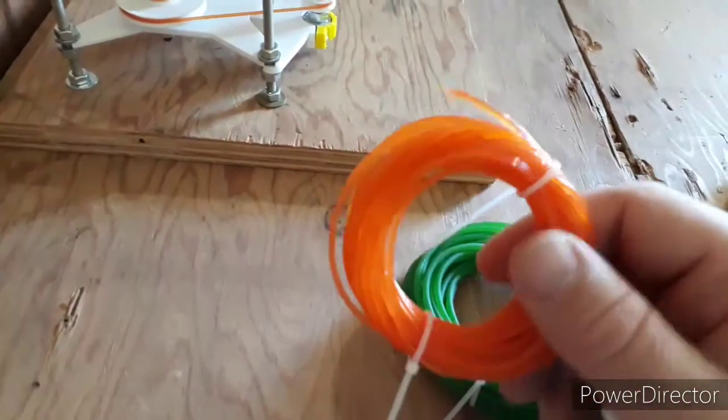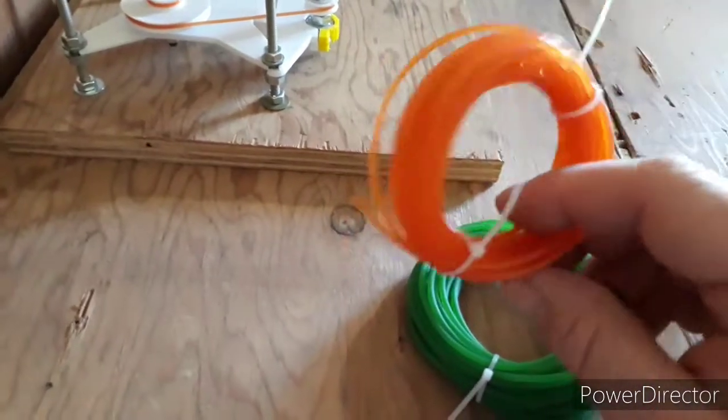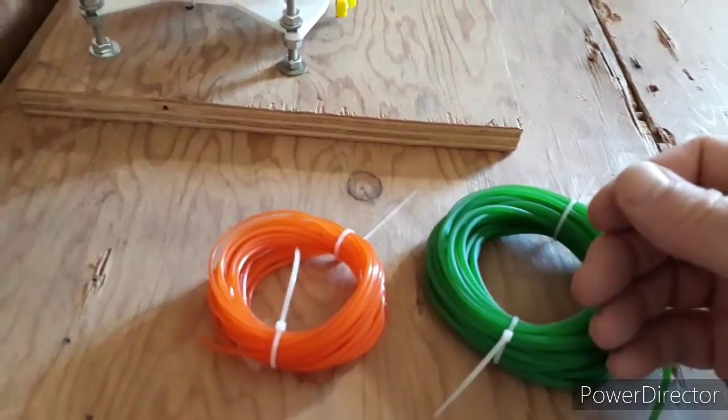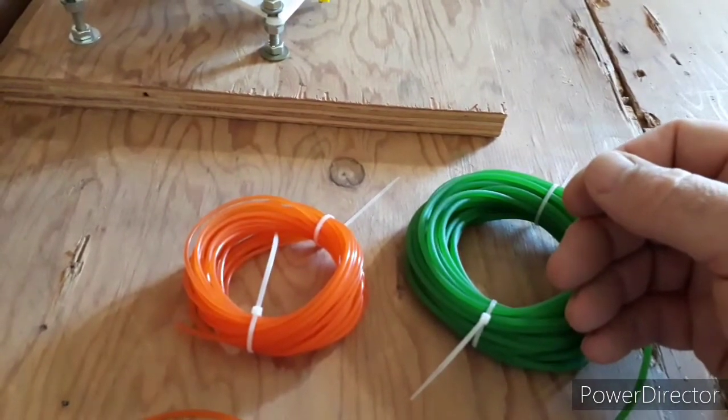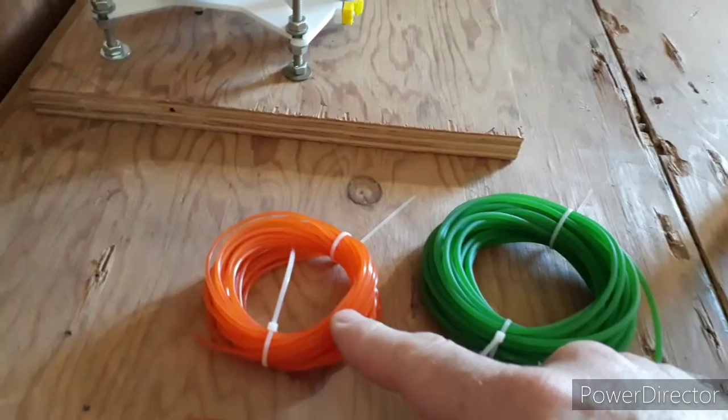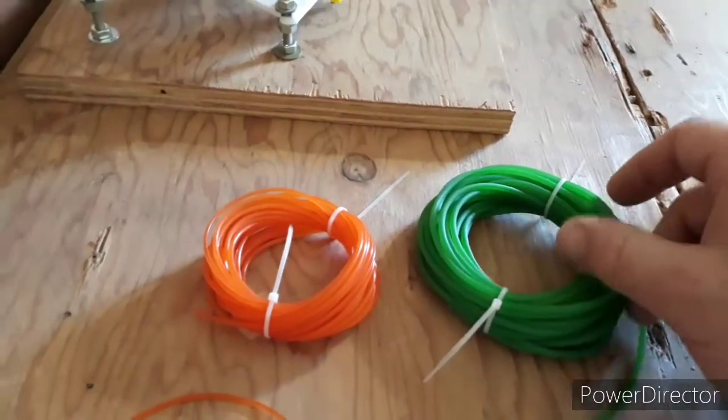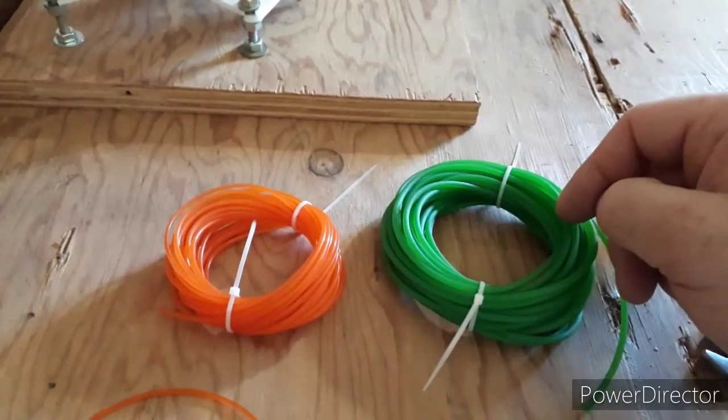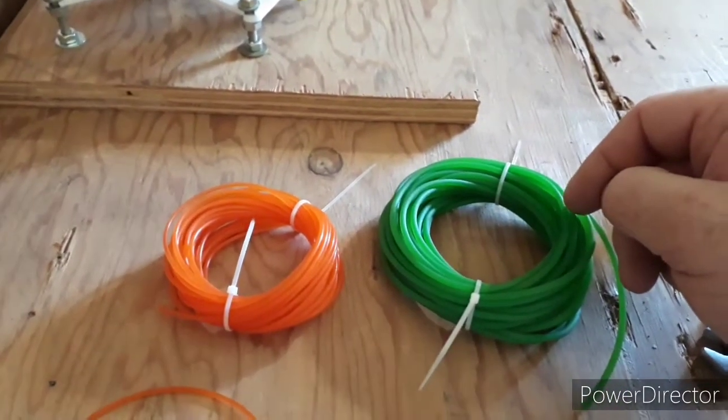It's called round polyurethane belting. Both of these were about 10 bucks - this is three millimeter, this is two millimeter. It comes in a big long length and you can make a belt any size you like. It's really quite simple to make the belt.